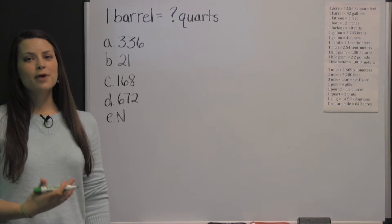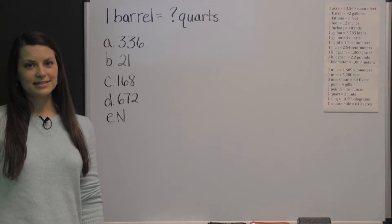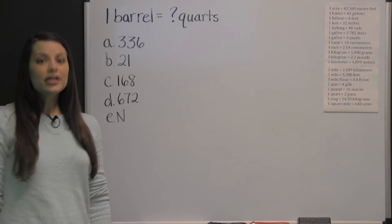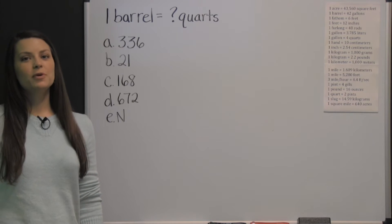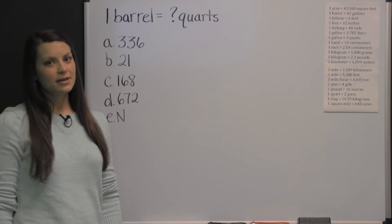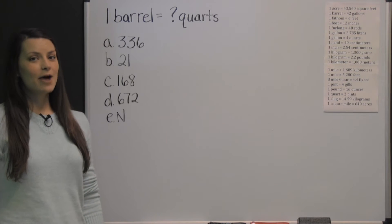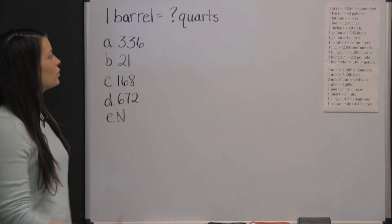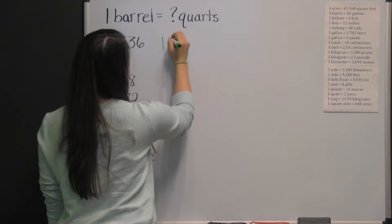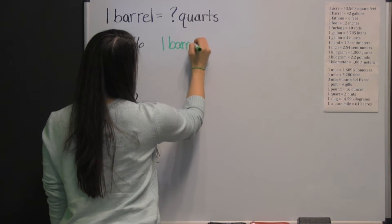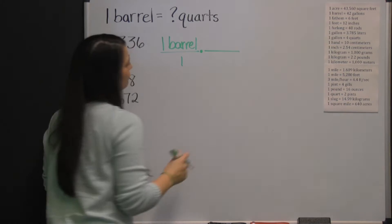This is a problem from the mathematical usage section of a CAST practice exam. On the mathematical usage section of the CAST exam, you'll be working conversion problems. Let's work this conversion: one barrel is how many quarts? We'll start with what we know, which is that we have one barrel. Put that over one, and then we're going to multiply by a conversion factor.